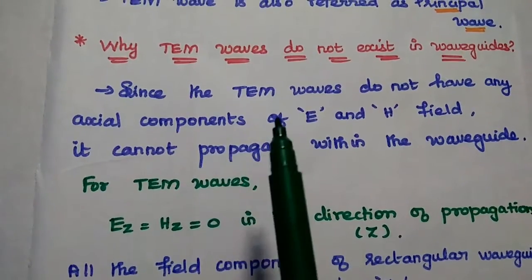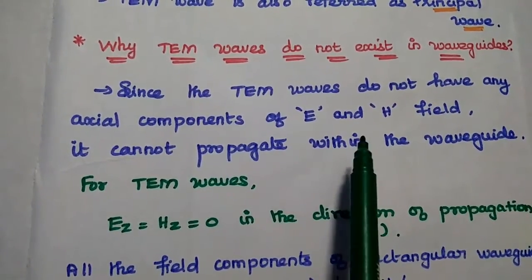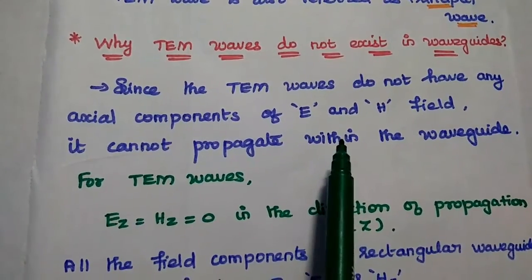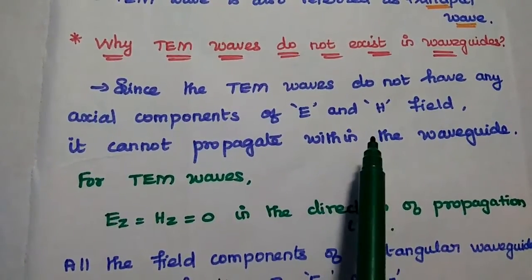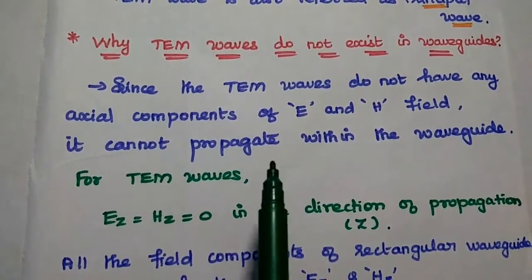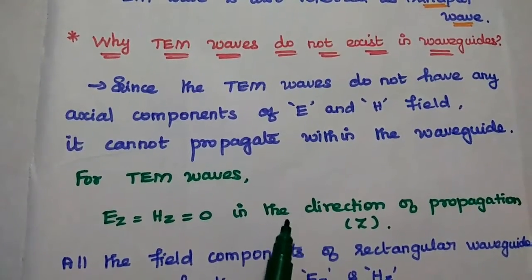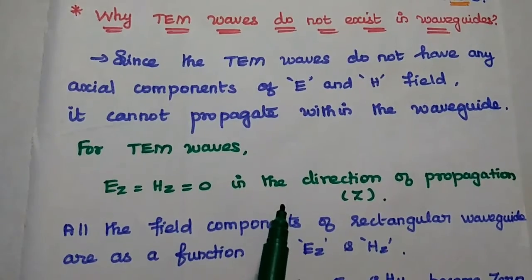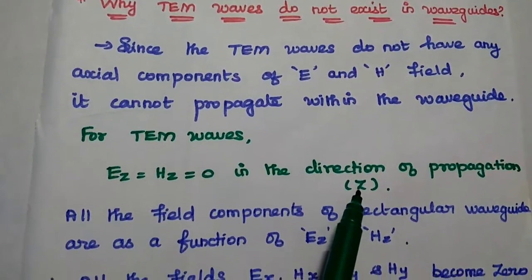As we have already discussed, TEM waves do not have any axial components of electric and magnetic field in the direction of propagation. So it cannot propagate within the waveguide. For TEM waves, Ez and Hz is equal to zero in the z direction of propagation.